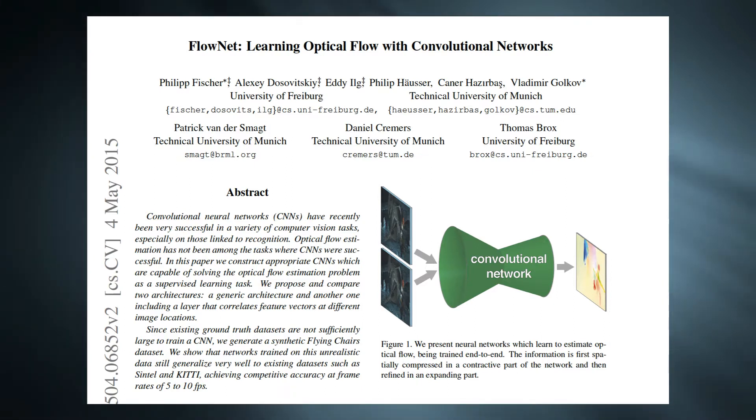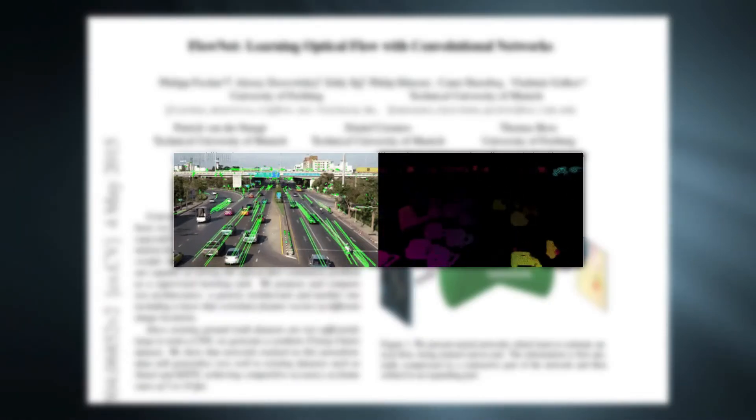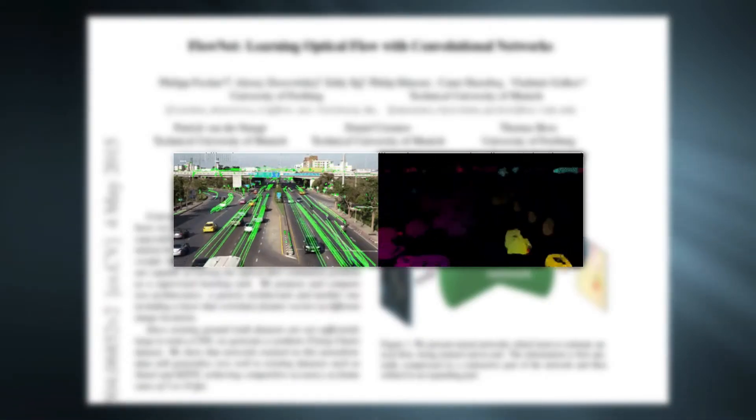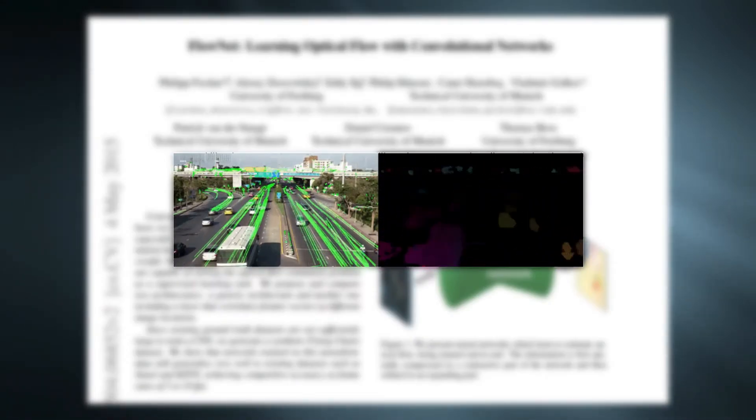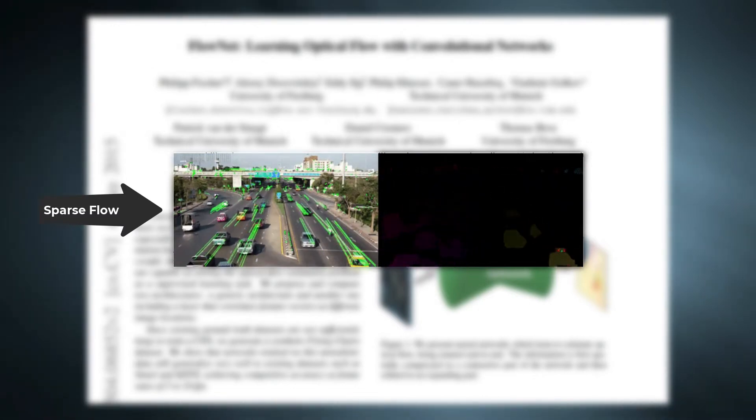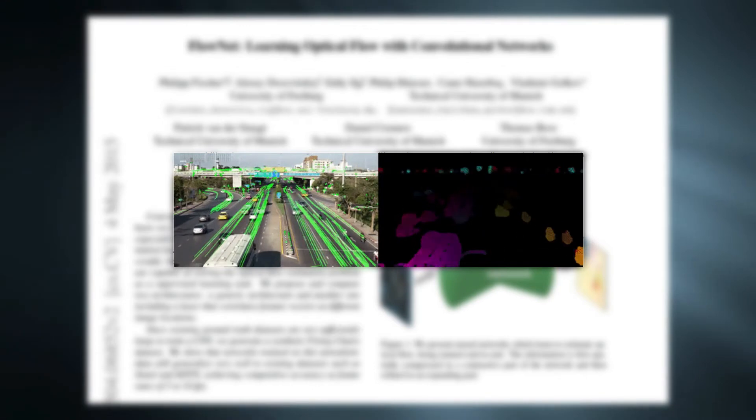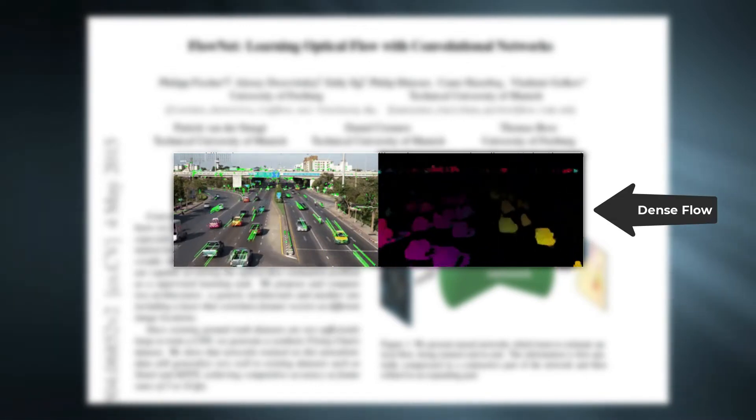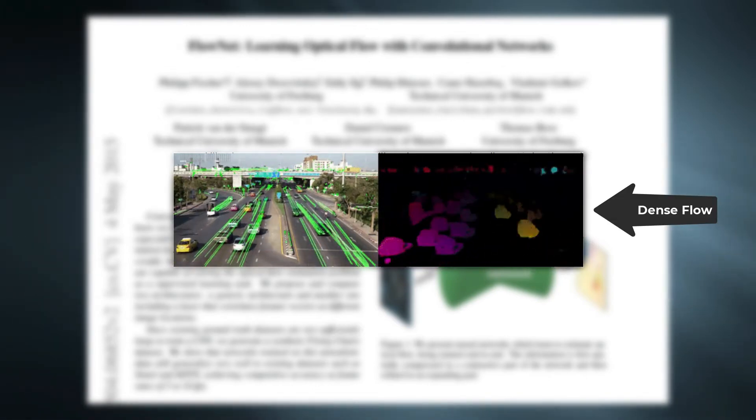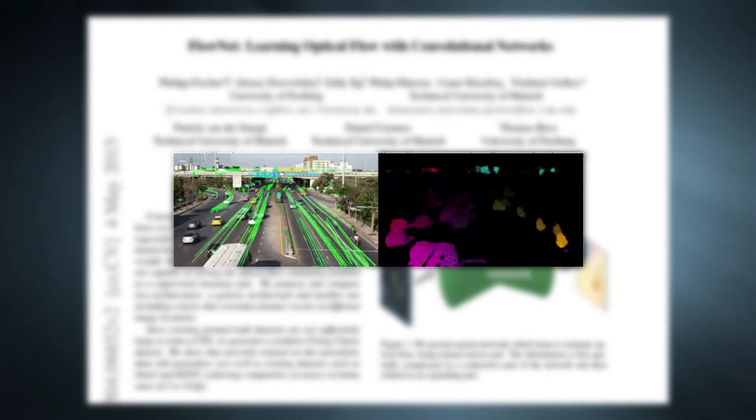What is optical flow? Optical flow shows the motion of objects between two images or consecutive frames. In sparse flow, motion is predicted for selected objects or selected features. Whereas in dense flow, motion is estimated for each pixel. Here highlighted parts represent motion.